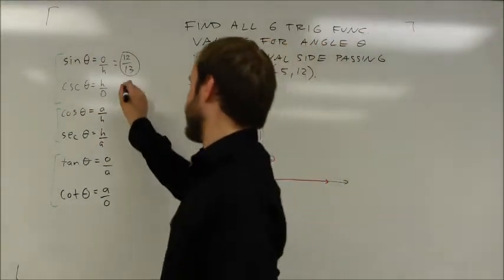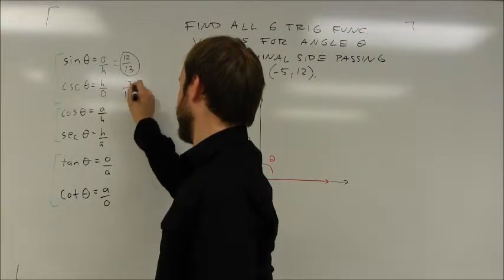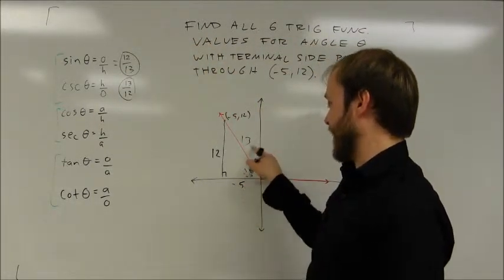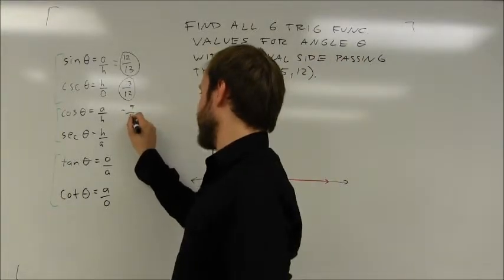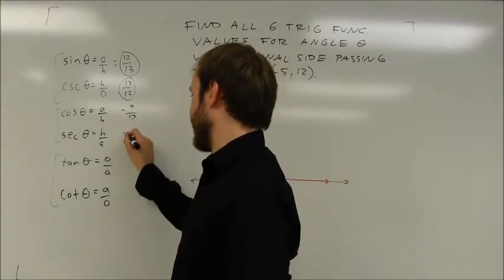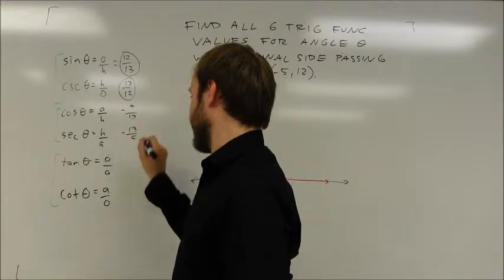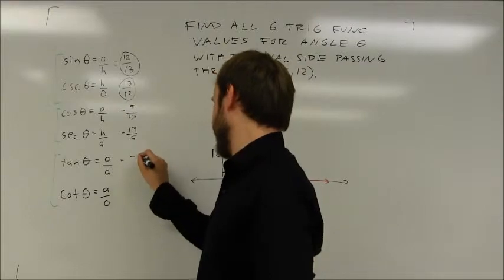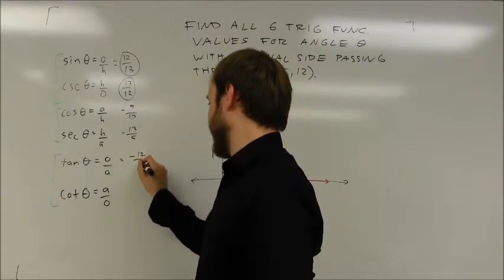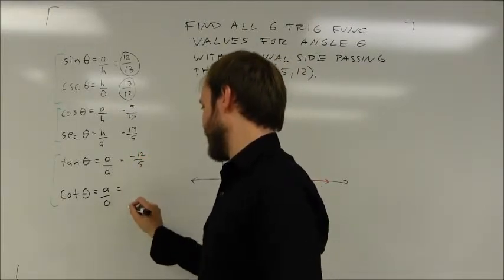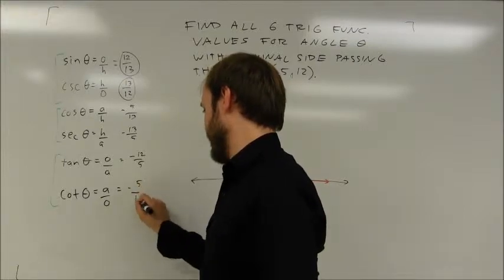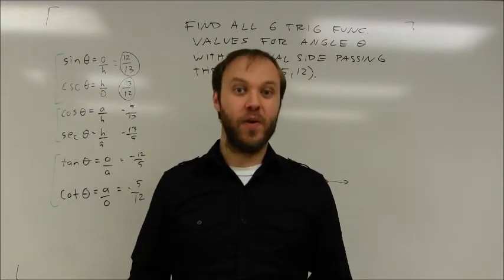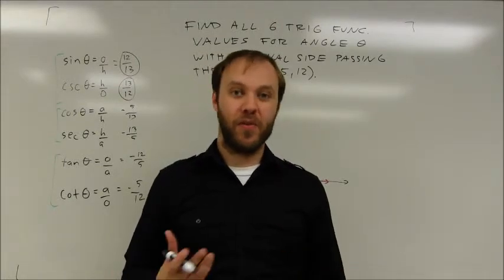I want the cosecant. That's just the reciprocal, 13 twelfths. Pretty easy. The cosine is the adjacent side over the hypotenuse. That's negative 5 thirteenths. The secant is the reciprocal, so negative 13 fifths. The tangent is the opposite side over the adjacent. That's going to be negative 12 fifths. And the cotangent is going to be the reciprocal of that, which is negative 5 twelfths. So very easy to find six functional values really quickly, once you've got your triangle drawn with all three sides labeled.